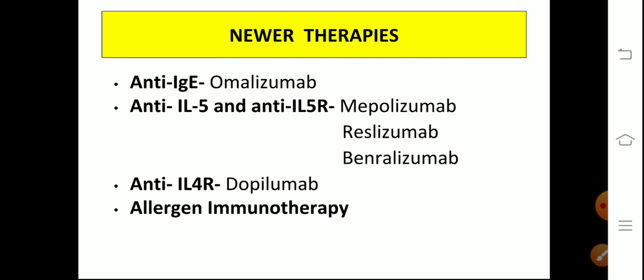Regarding newer therapies: biological therapy includes anti-IgE — omalizumab; anti-IL-5 and anti-IL-5 receptor — mepolizumab; and anti-interleukin-4 receptor — dupilumab. Allergen immunotherapy is a new and very effective modality of treatment. In allergen immunotherapy, you administer gradually increasing doses of the allergen to which the patient is sensitive, to reduce the patient's allergic response. The patient gradually becomes tolerant so that when exposed, they don't develop an attack. If administered properly it is very safe and effective; it is usually given subcutaneously.